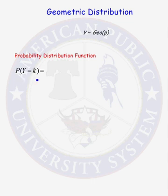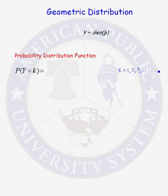So let's first answer the question: what values of k make this probability a non-zero amount? We need to answer when can our first success occur. Our first success can occur on the first trial, on the second trial, on the third trial, or any trial thereafter. So the list of possible outcomes for our random variable y is a countably infinite set. Now let's calculate the probability that y equals k for k equals 1, 2, 3, dot dot dot.